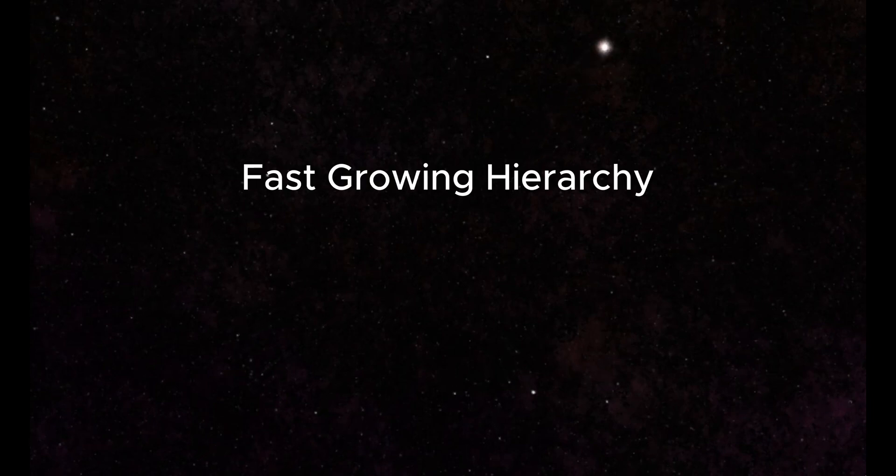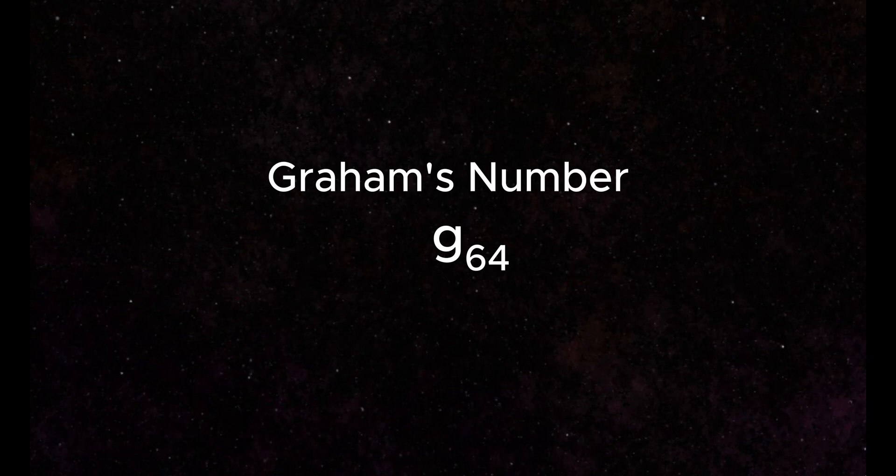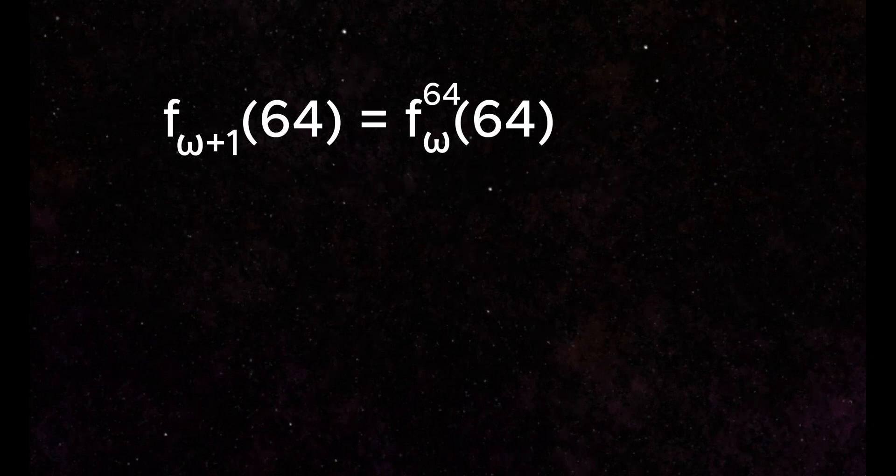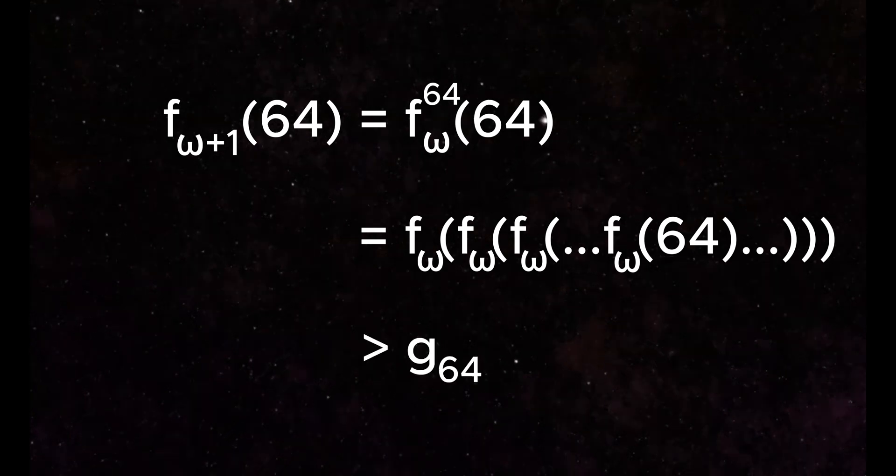Last time, we talked about the fast-growing hierarchy and how to use this to build fast-growing functions. This allowed us to reach the massively large Graham's number, a value that is far beyond our comprehension, requiring many recursive processes even at the level of these extraordinarily rapid-growth functions. However, even this extreme number can be surpassed by the sequence we will discuss today.